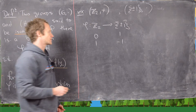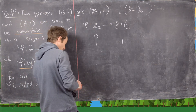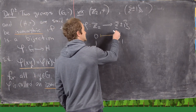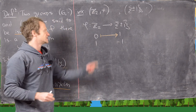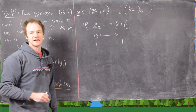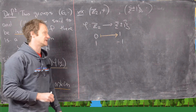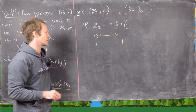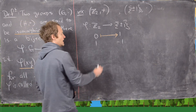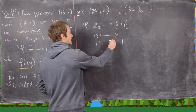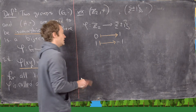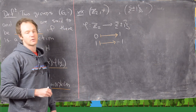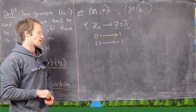It stands to reason that we should take the identity on the left to the identity on the right. So 0 is the identity on the left and 1 is the identity on the right. We'll actually prove we have to do that later. Then 1, the generator on the left, is sent to -1, the generator on the right.